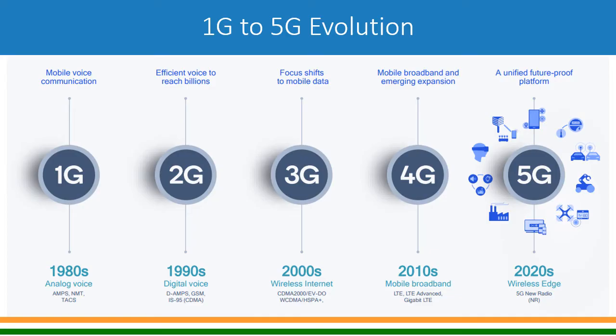From 2000 to 2010, again within a span of ten years — we see that every ten years there is a jump from one generation to another. In 2010, 4G came and the focus shifted to mobile broadband, that is high-speed internet on your mobile phone. The technologies used are LTE, LTE Advanced, and now Gigabit LTE. Again from 2010 to 2020, the focus is moving from 4G to 5G.